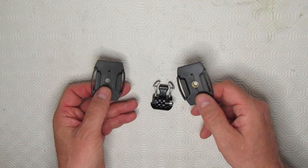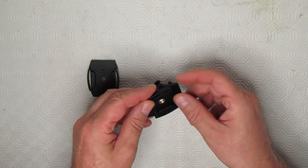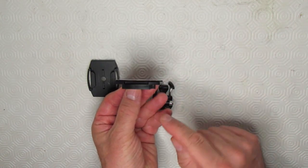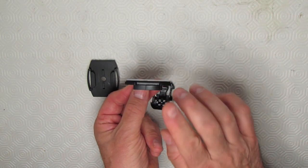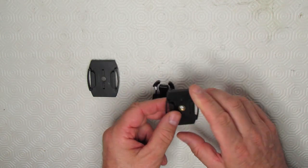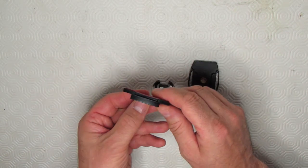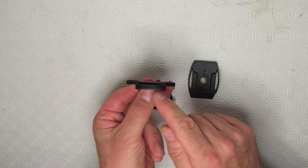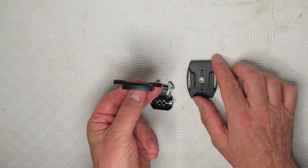Now they look the same, but they are actually different. Let's show you here. This is completely flat so these are meant to be stuck to flat surfaces. And this one, when you look at it this way, you can see it's contoured which is meant to stick to curved surfaces like your helmet.